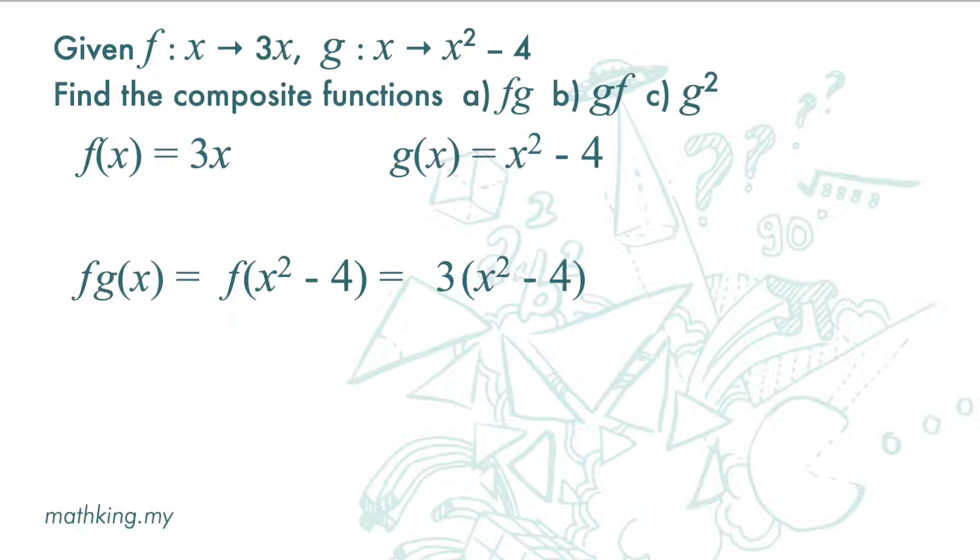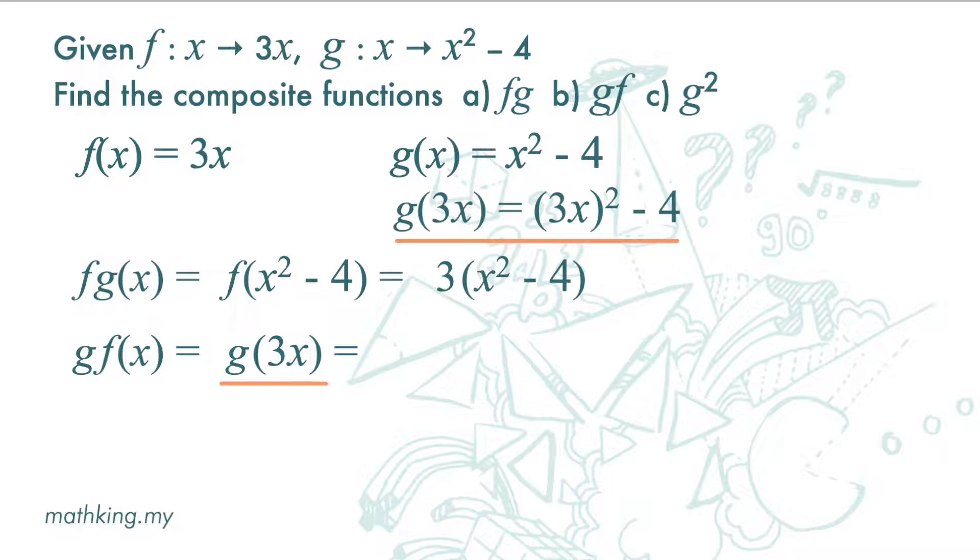For part b, we want to find the composite function gf. So we write gf(x) here. Now f(x) is 3x. Next, function g is x squared minus 4, but now the object is 3x and not x. So we have (3x) squared minus 4, which is 9x squared minus 4.